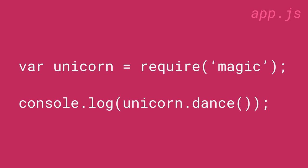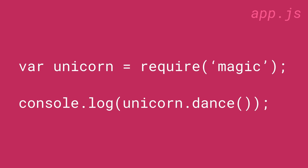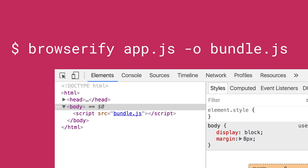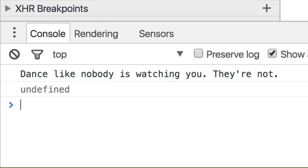Using it is pretty straightforward. So you go and require something like a module called unicorn. You can then start using it, like do unicorn.dance. You go and run Browserify against it to generate a bundle, and when you try it out in the browser it'll log a message: "Dance like nobody is watching you. Because they're not."